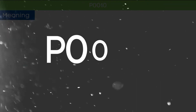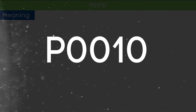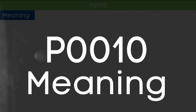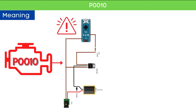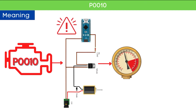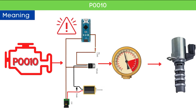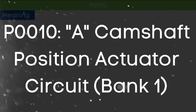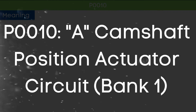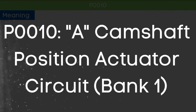First, let's understand what the P0010 code is. The P0010 code means that the ECM has detected a circuit issue with the solenoid actuator that directs oil pressure to the engine's variable valve timing system. It indicates an issue with the camshaft position actuator circuit for bank 1, specifically referring to the intake camshaft.